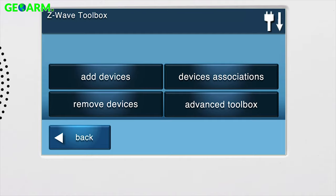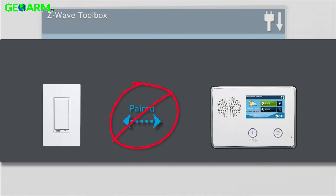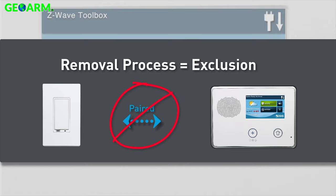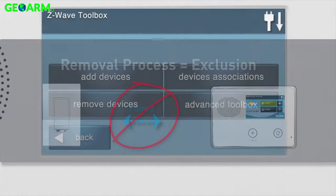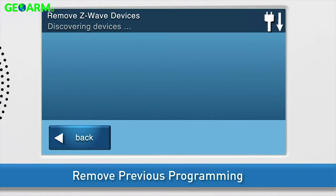Z-Wave devices may need to have past programming removed before they can be added to a panel, even if they are new. We do this by performing the removal process, which is also known as exclusion. To begin the removal process, select the Remove Devices button. The Remove Z-Wave Devices screen will appear.